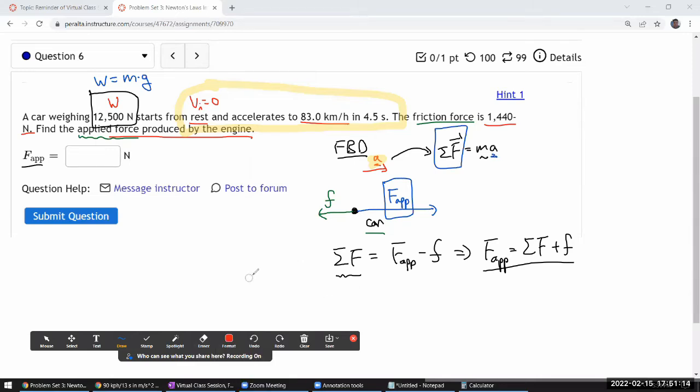So let me just do that calculation step. Step number one, that's going to give me the acceleration. Step one B, that's going to give me the mass. Step two, that's going to give me the net force. And this will be step number three. That's going to give me the applied force.